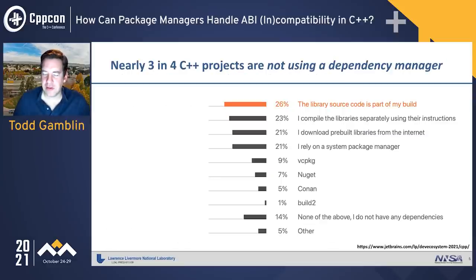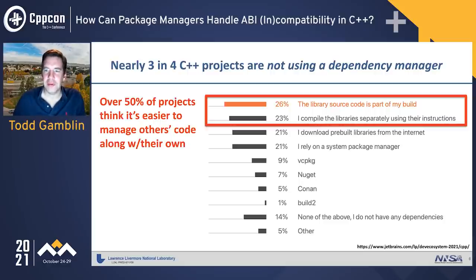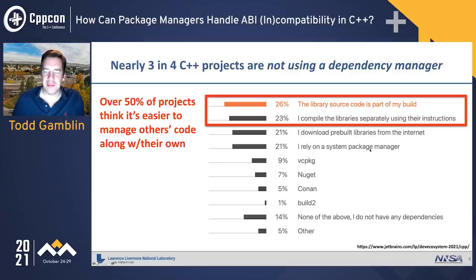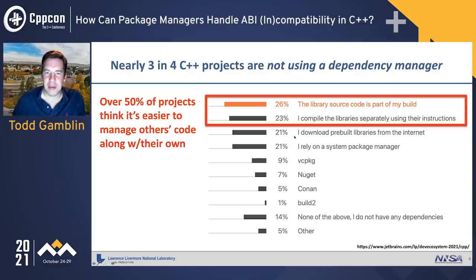According to the JetBrains survey, nearly three in four C++ projects are not using dependency management — a pretty significant difference from other modern language ecosystems. Essentially 50% of projects think it's easier to manage other people's code along with their own rather than leveraging the major package managers available for C++. At least 21% use a system package manager like a Linux distro, but only 9% use VCpkg, 5% use Conan, and 1% use build2. This is a testament to how hard it is to manage compatibility between C++ packages.